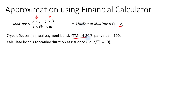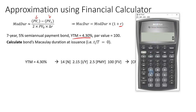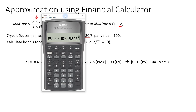First, using the current yield of 4.3%, we calculate the present value of the bond. With 14 semi-annual periods, yield of 4.3 divided by 2 equals 2.15, coupon of 2.5, and face value of 100, we compute PV to get 104.192797. I'll convert this to a positive number and store it as memory 2 — I'm purposely choosing memory slots 2, 4, and 6 to match the formula's notation.